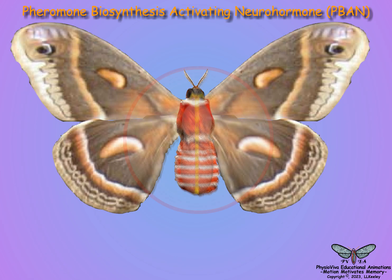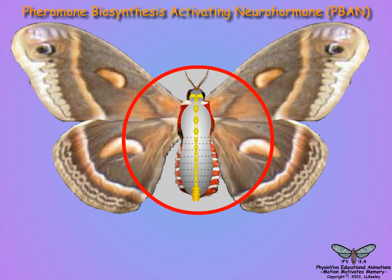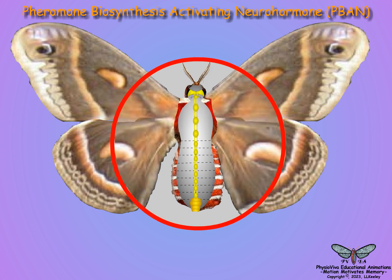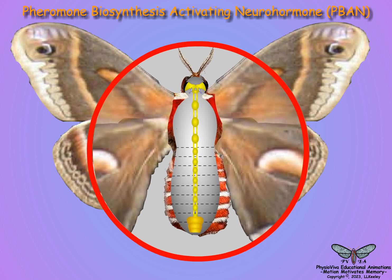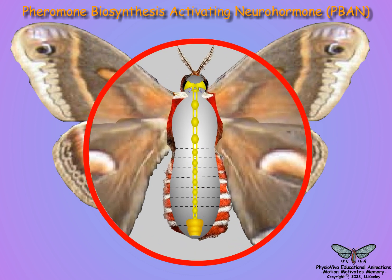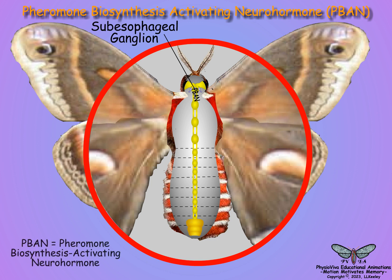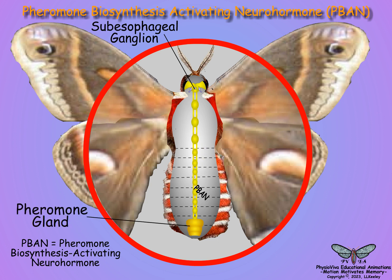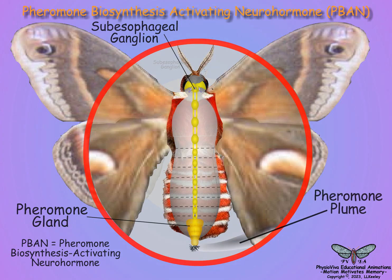Female insects generally release pheromones to attract males of their species for mating. The subesophageal ganglion synthesizes a pheromone biosynthesis activating neurohormone. It stimulates pheromone gland cells to produce the calling pheromone during specific periods of the circadian cycle, usually the dark phase.